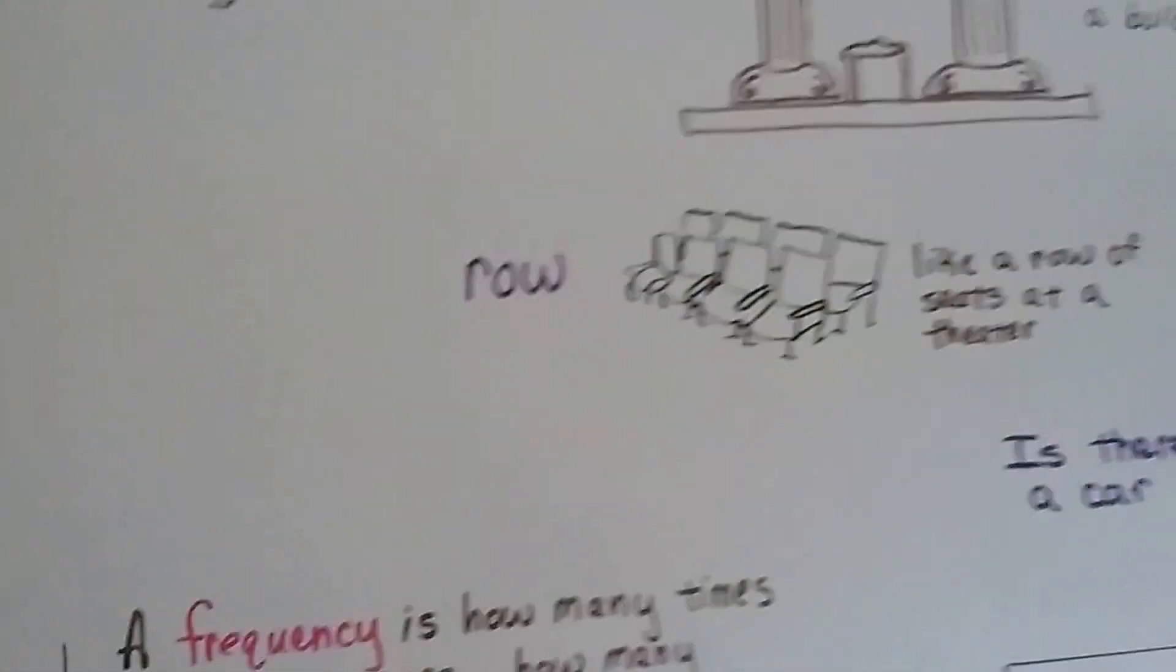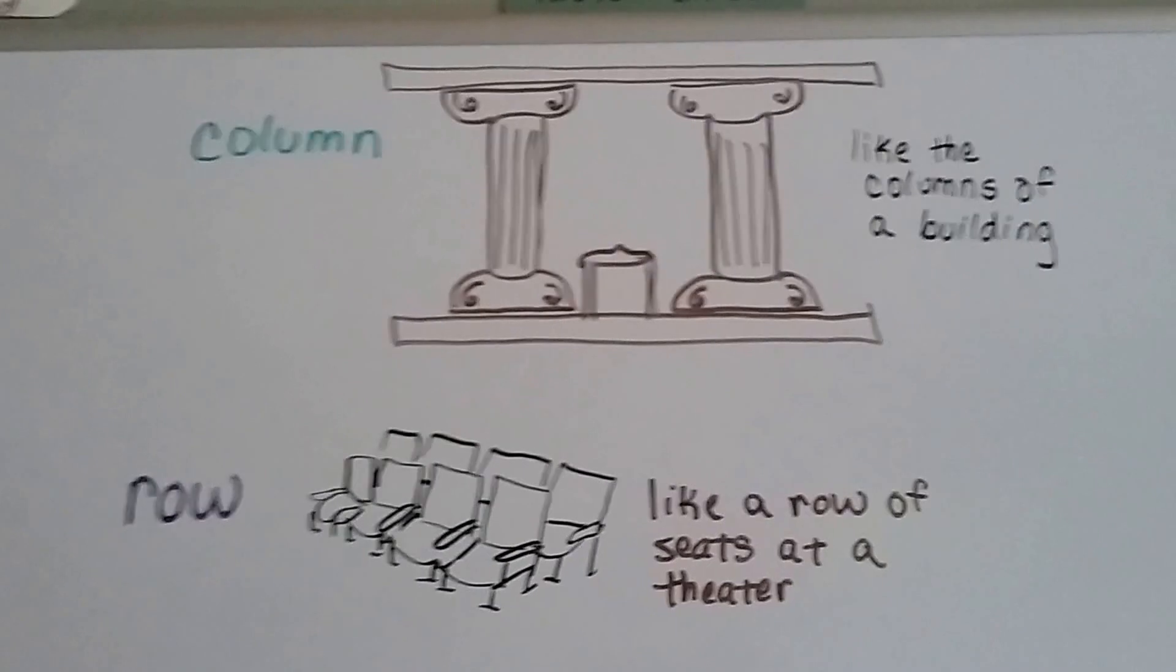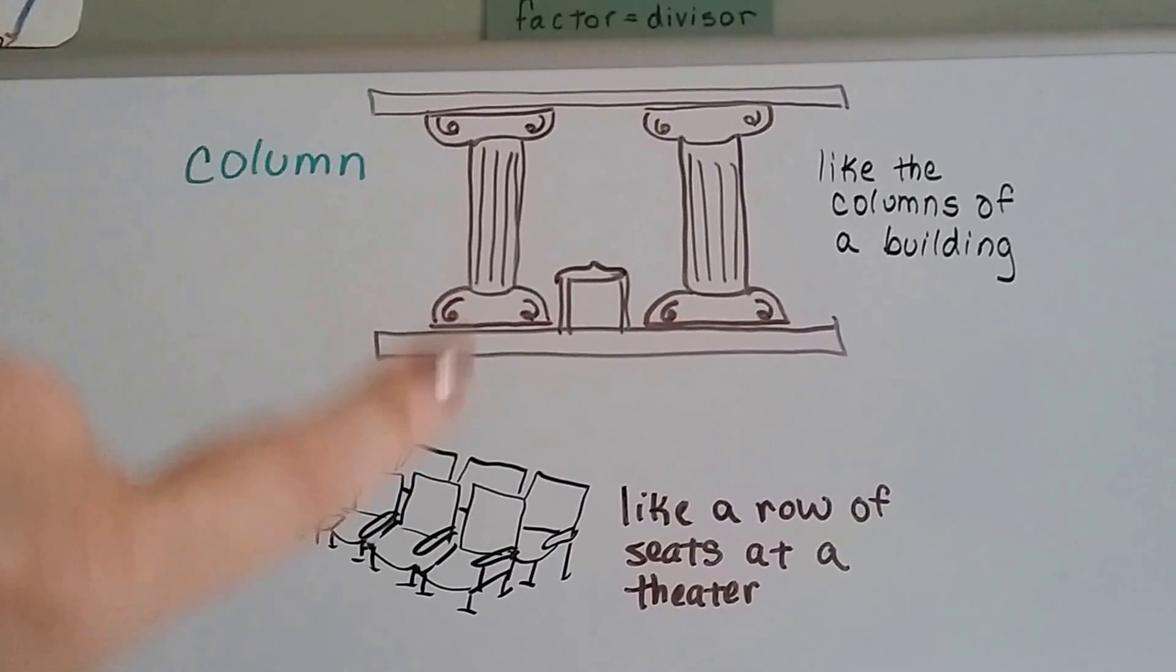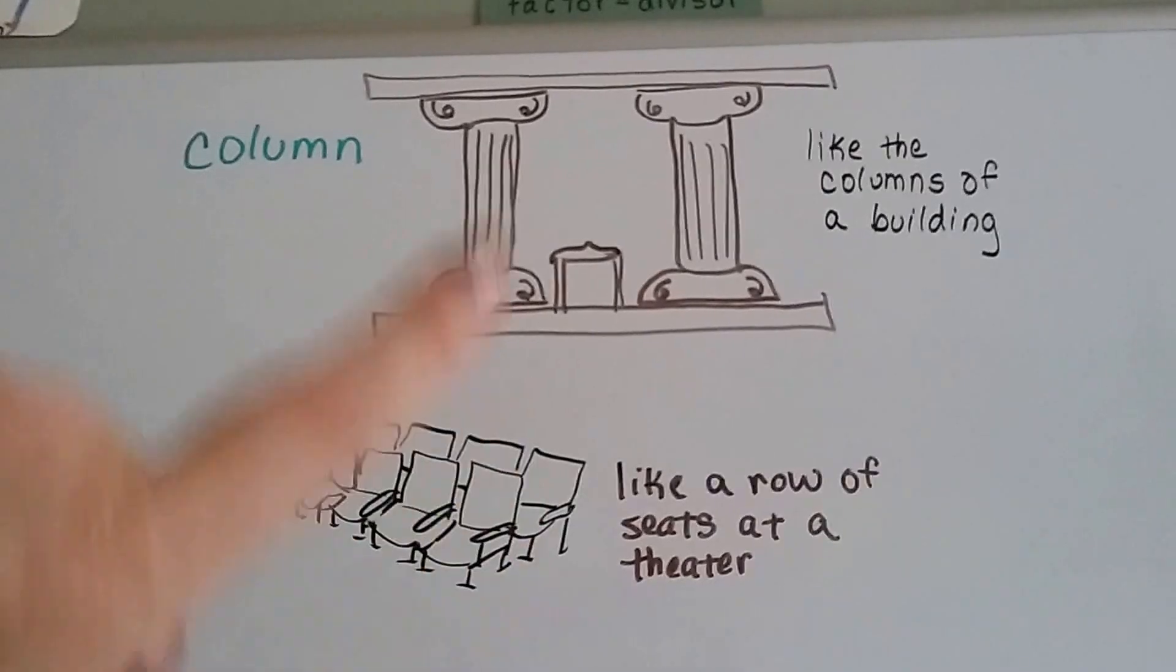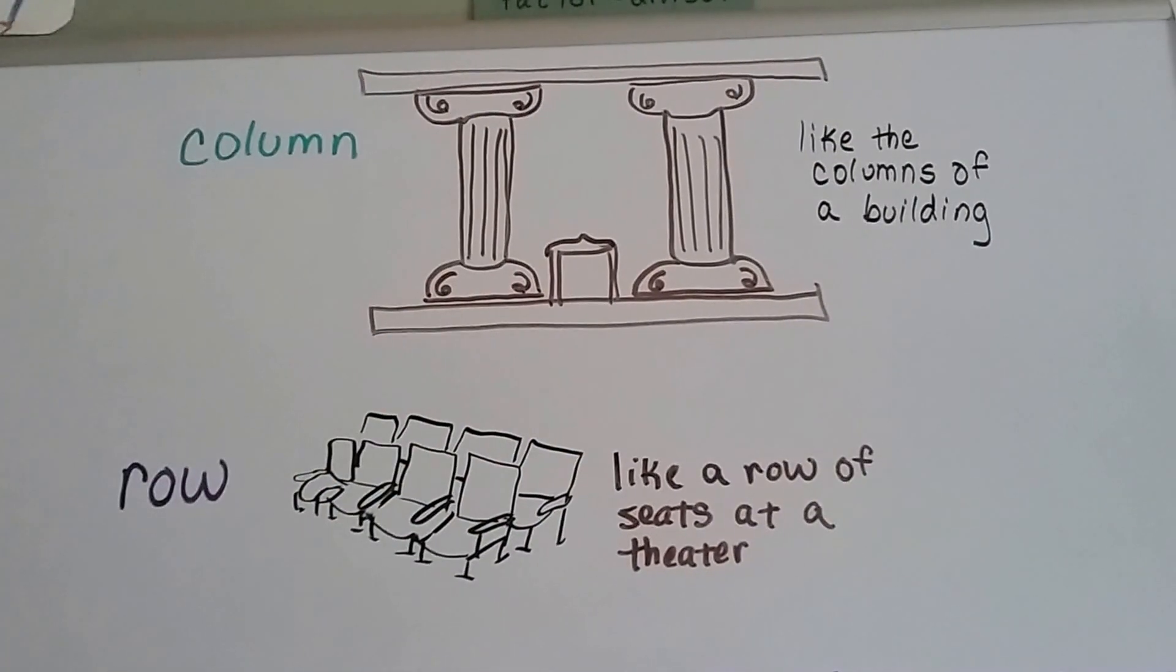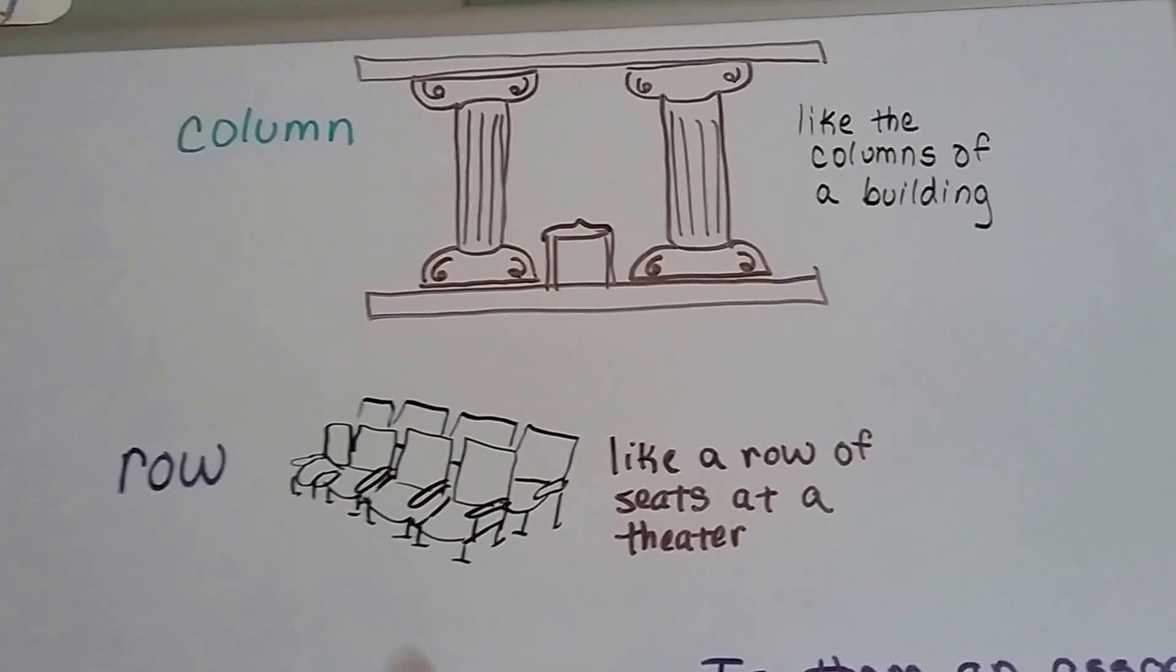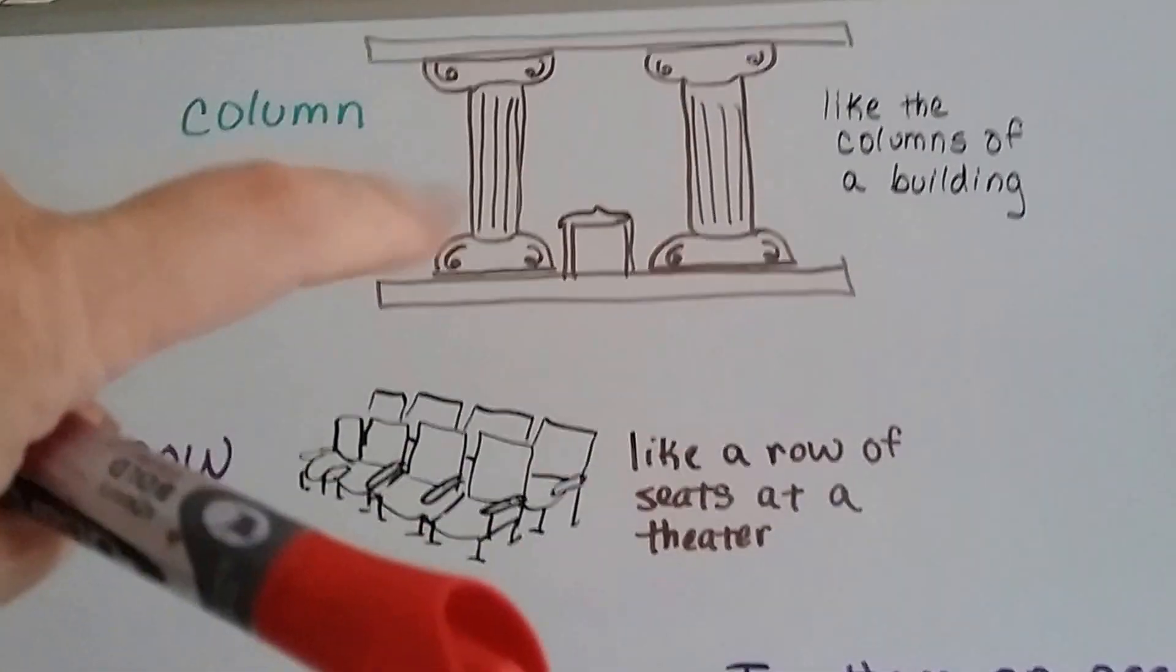Now to remember the columns and rows, because a lot of people get this mixed up, just remember that columns hold up buildings like a city hall or a government building. You'll see those big huge columns at the Capitol that hold up the building. A row is like a seat in a theater. Which row do you want to sit in, the front row or the back row? That's a row and that's a column.